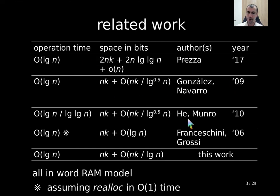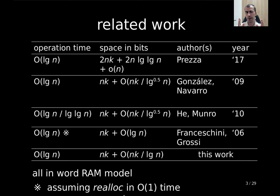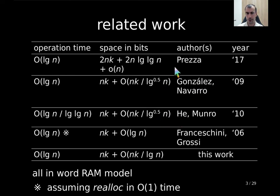Building on that, Munro could improve the operation time to log n over log log n. Another approach, back to standard log n time, is from Franceschini and Grossi, which has an improved low-order term of just log n. However, they use a stronger model allowing a real realloc operation in constant time — you can extend or shrink an array in constant time — whereas in the word RAM model that naively takes linear time. In our approach we use the standard word RAM model, achieve logarithmic time, but get nk plus order of nk over log n, which is an improvement over the prior approaches.